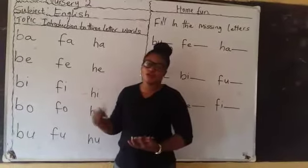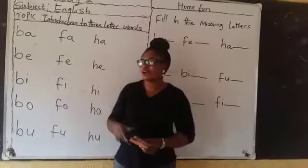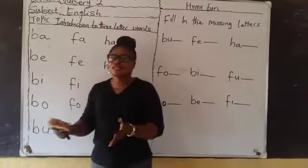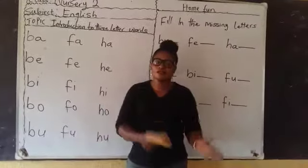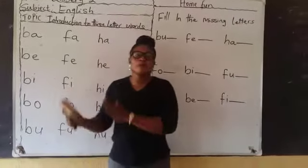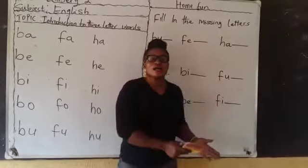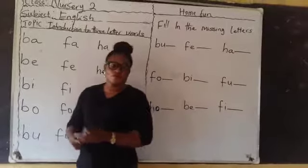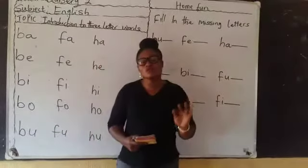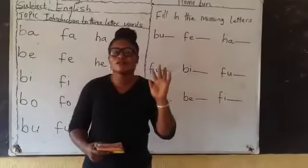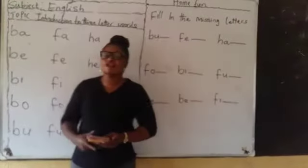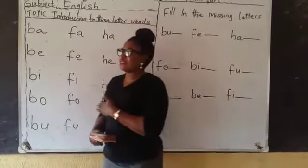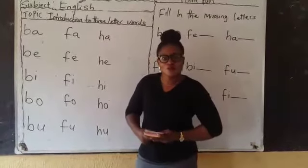Now, before we go to what we have today, we are going to revise what we had before. Ms. Zedin has taught you introduction to letters, the vowel and the consonant. And the one we did last is blending the consonant and the vowel. Where we chose different letters from the consonant and blended them with our 5 vowel sounds. So today we are going to use those 2-letter blends from our last lesson to form our 3-letter words.